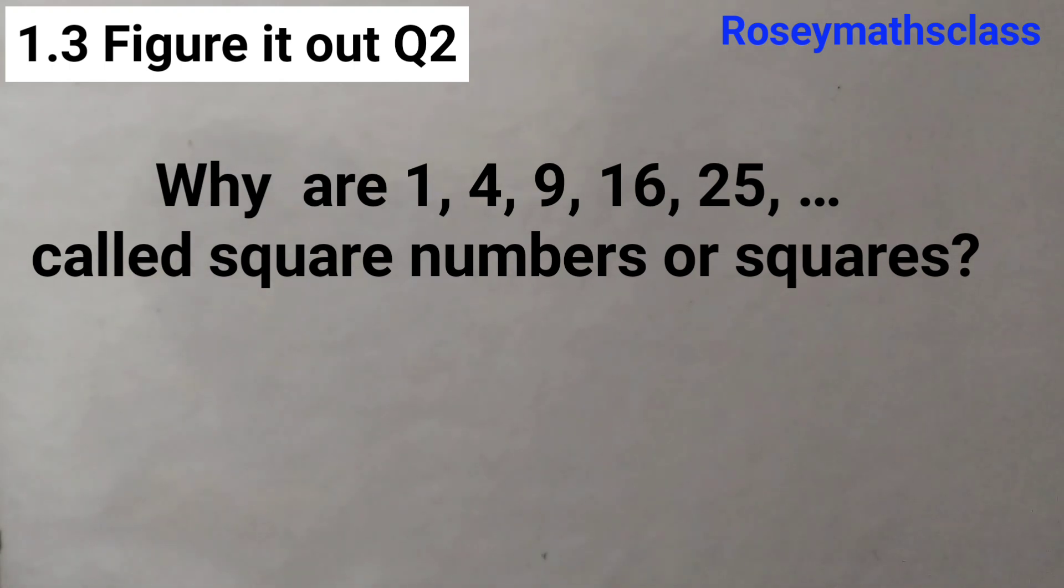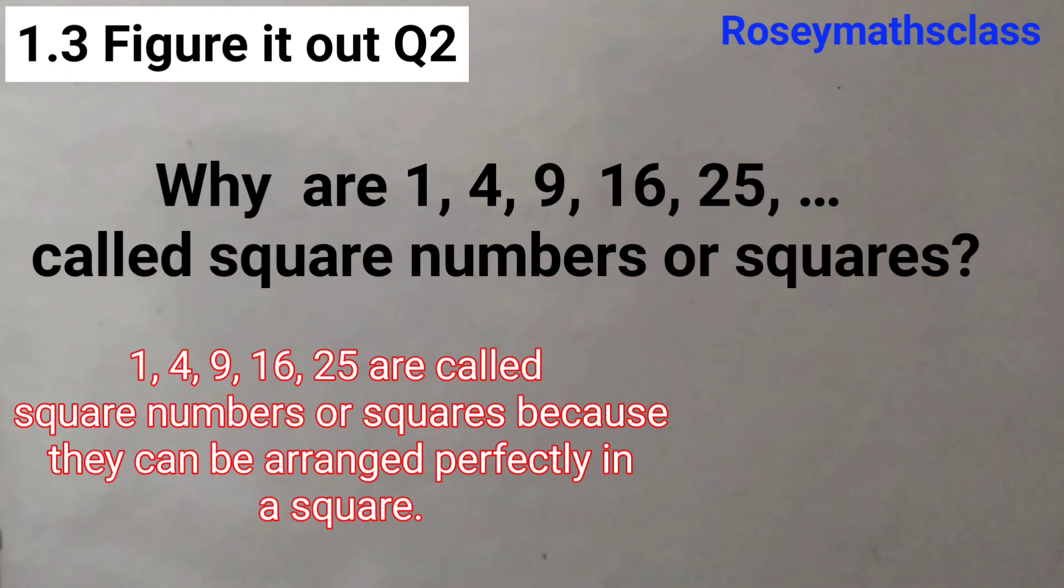So it is very much similar to the previous one. However, here, these numbers can be arranged perfectly in a square, right? A square has 4 equal sides, so these numbers can be arranged perfectly in a square. And again, you can see the diagram which is given here.